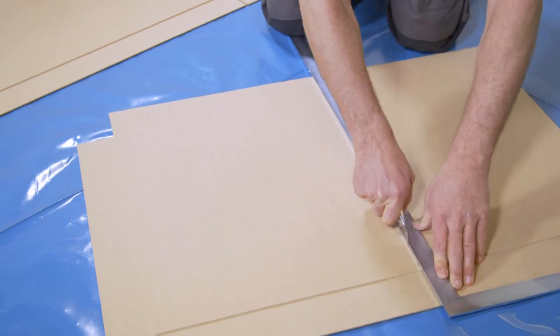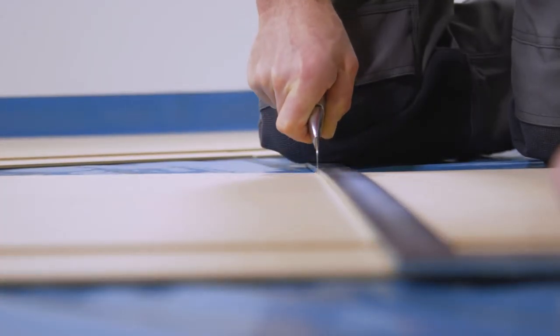The second row must be started using a board one-half or one-third the original length to create a good stretcher bond pattern.